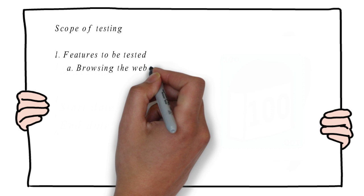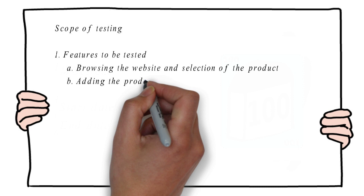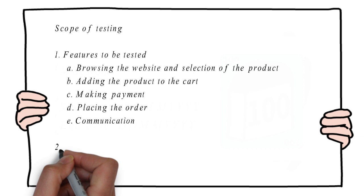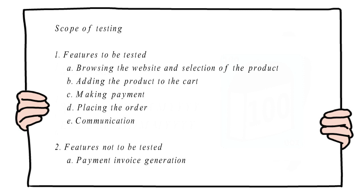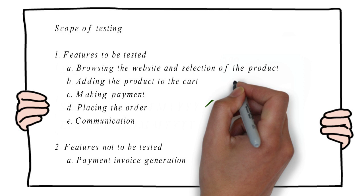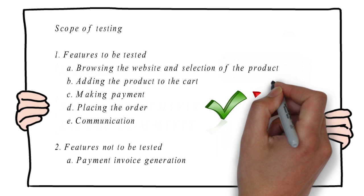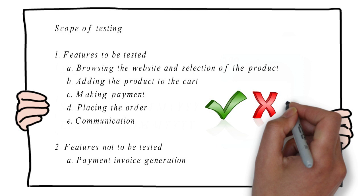The usual flow of a shopping website is: customers visit the website, they search for or browse products, they select the product, add it to the cart, make the payment, and the order is placed. A communication is then sent to both parties — the customer and the vendor. Also, the customer's login ID creation details would be there. Under the features to be tested section, we can have: browsing the website and selection of the product, adding the product to the cart, making the payment, placing the order, and communication.